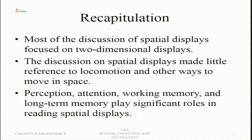The discussion on spatial displays made little reference to locomotion and other ways to move in space. Locomotion may occur because we walk, bicycle, or move by a car or vehicle. Perception, attention, working memory, and long-term memory play significant roles in reading spatial displays. The information processing model plays a very important role in reading displays, arriving at meaning based on symbols, and then taking appropriate action to maintain or change the system state.